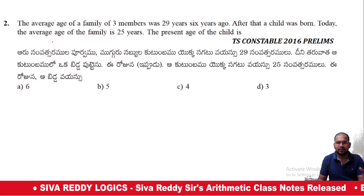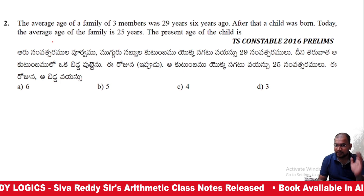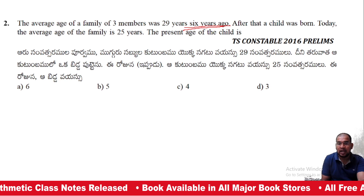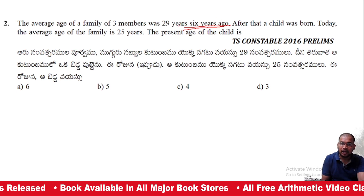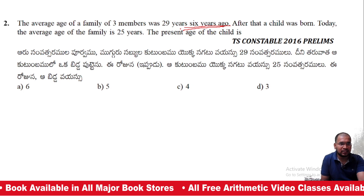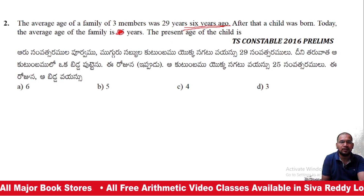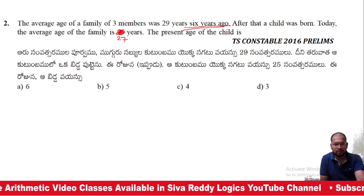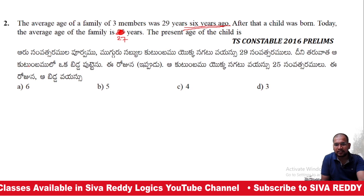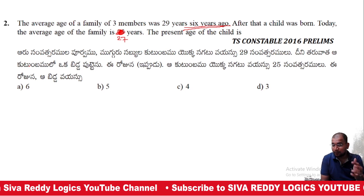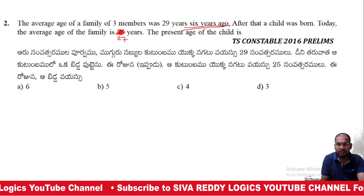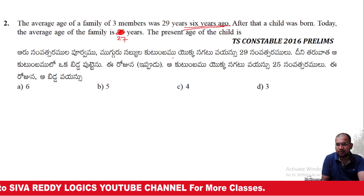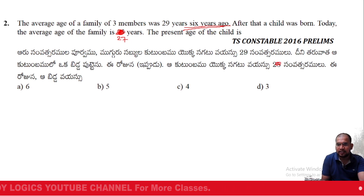The average age of a family of 3 members was 29 years, 6 years ago. After that, a child was added. Today, the average age of the family is 27 years. We need to find the current age of the child.